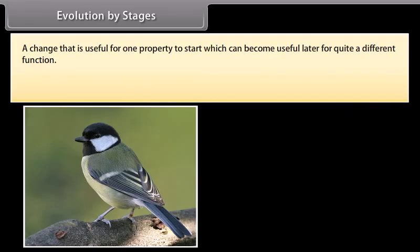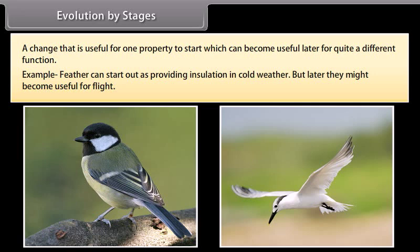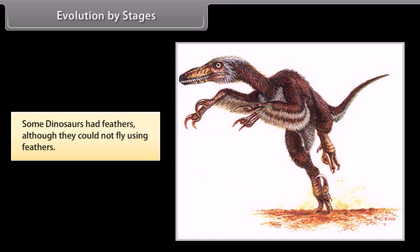A change that is useful for one property to start with can become useful later for quite a different function. For example, feathers can start out as providing insulation in cold weather, but later they might become useful for flight. Some dinosaurs had feathers, although they could not fly using them.